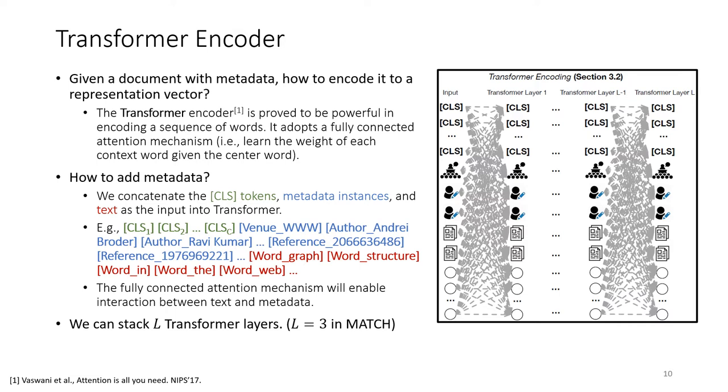After embedding pretraining, the problem becomes: given a document with metadata and their pretrained embeddings, how to encode the document to a representation vector? Here we adopted the transformer encoder, which is proved to be powerful in encoding a sequence of words. It adopts a fully connected attention mechanism that basically learns the weight of each context word given the center word.